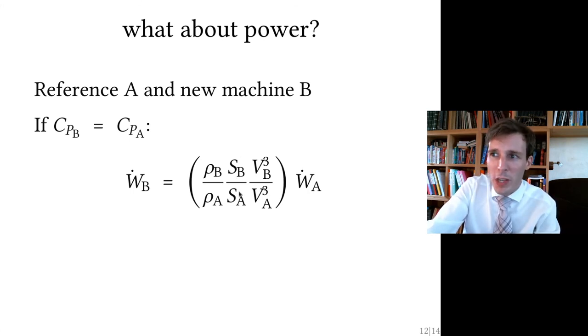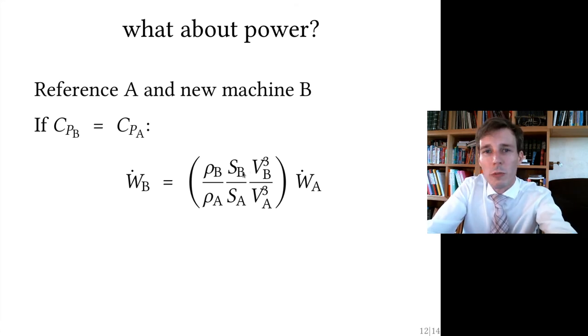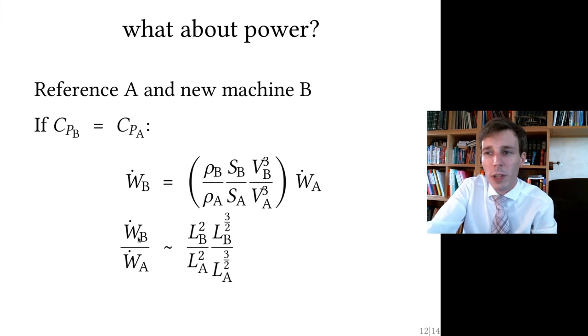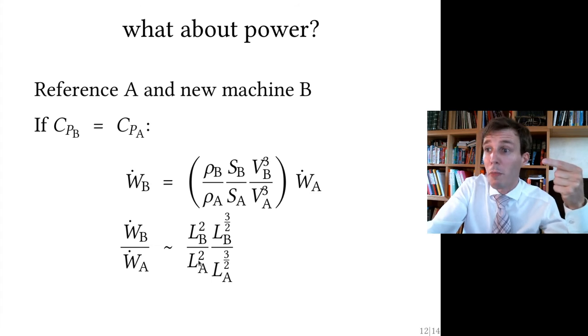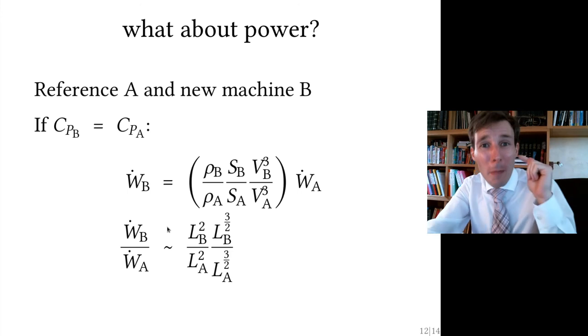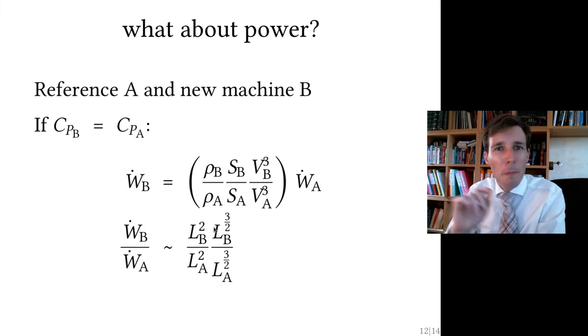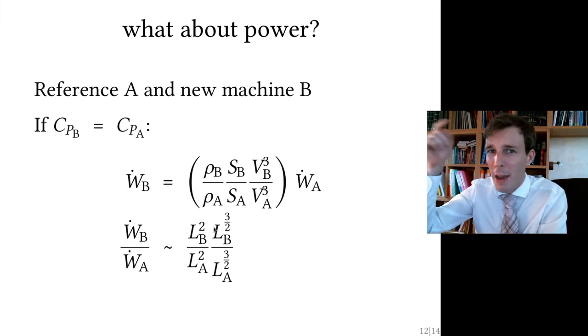The area, the ratios of area, grows with the ratios of length squared. And the ratios of velocities grows with the length to the power of one half. So if you replace those terms here with lengths, then you get this relationship. Power, the ratio of new to old power, grows with the ratio of new to old length squared, multiplied by the ratio of new to old length cubed to the power of one half. So you have now, the power grows with length to the power of two plus three halves, which is three and a half. Power grows with the power of three and a half of length.